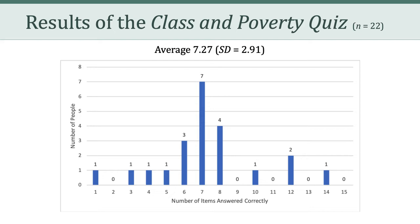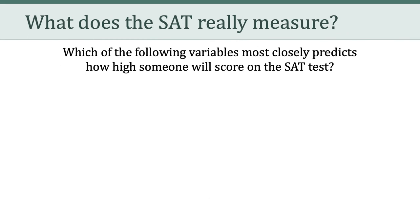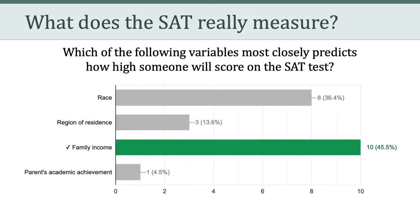One of the questions on the quiz was about the SAT — the standardized test, which I'm sure everyone knows is often used in college admissions in the U.S. This particular item gets at the issue of what the SAT really measures. The item asked which of the following variables most closely predicts how high someone will score on the SAT: one, race; two, family income; three, parents' academic achievement; and four, region of residence. The correct answer was family income, which about 46% of you got correct.